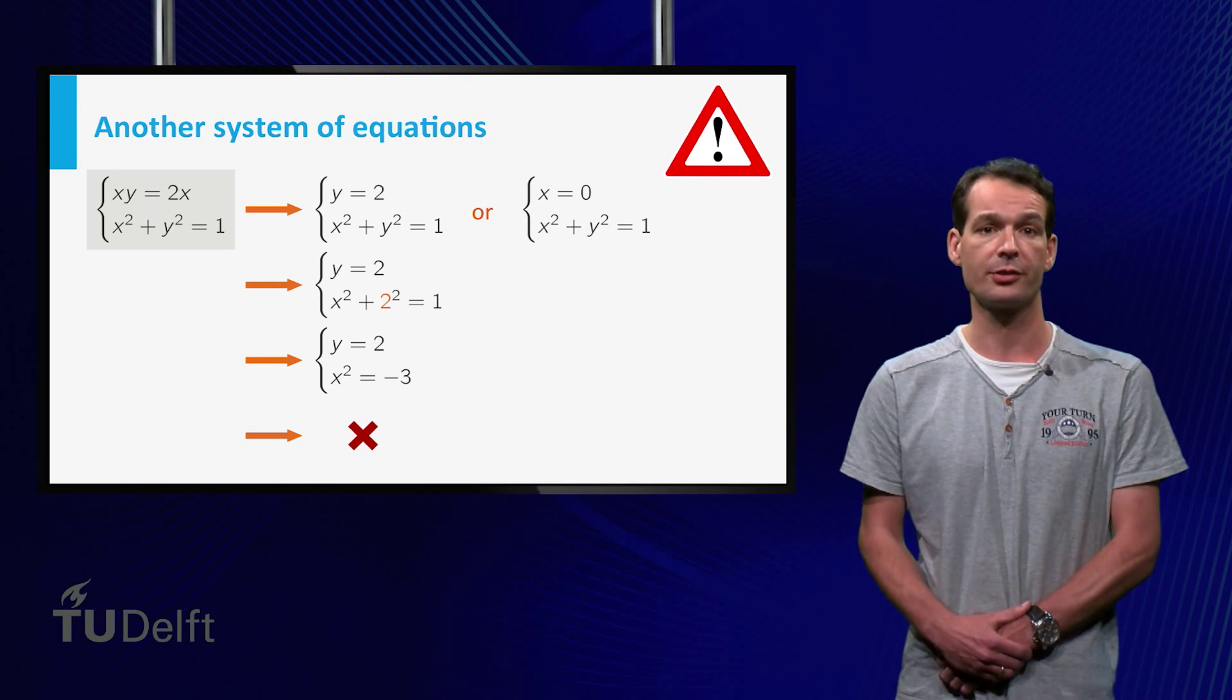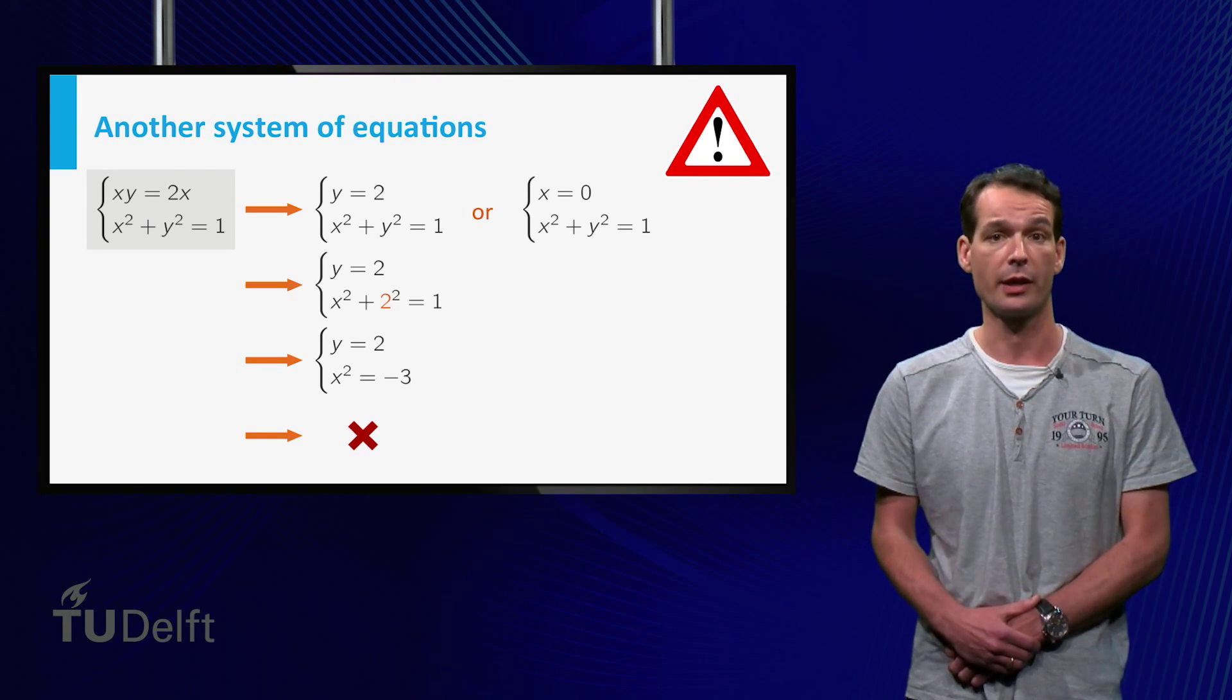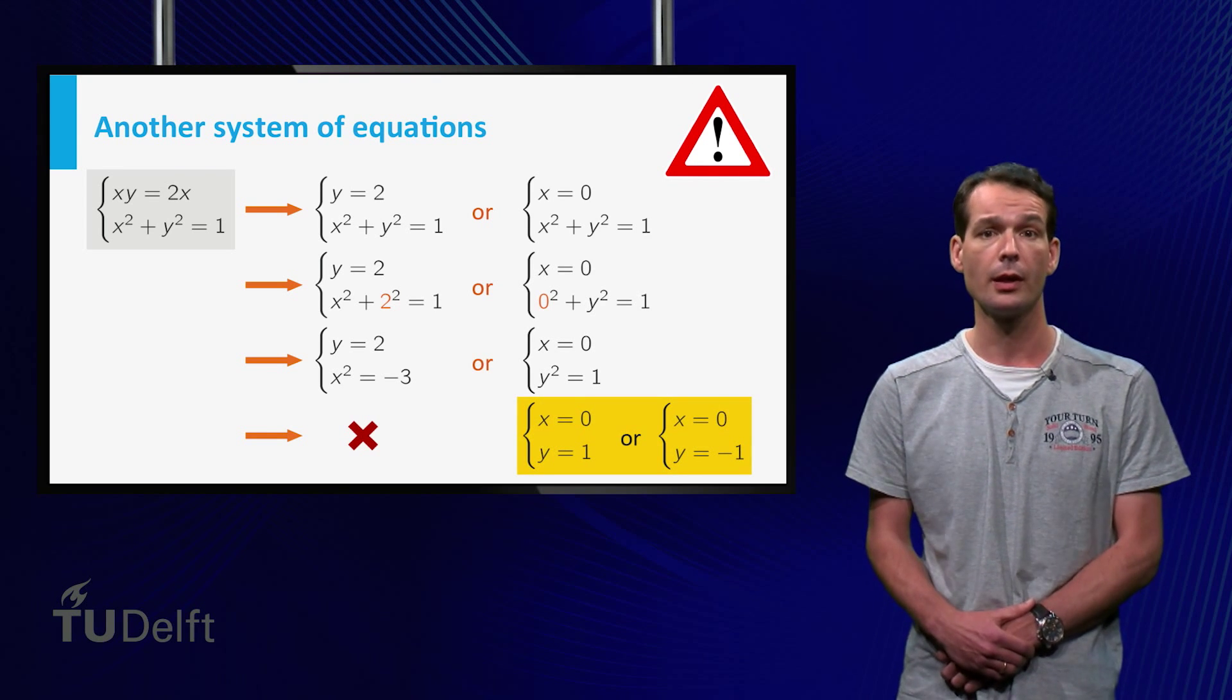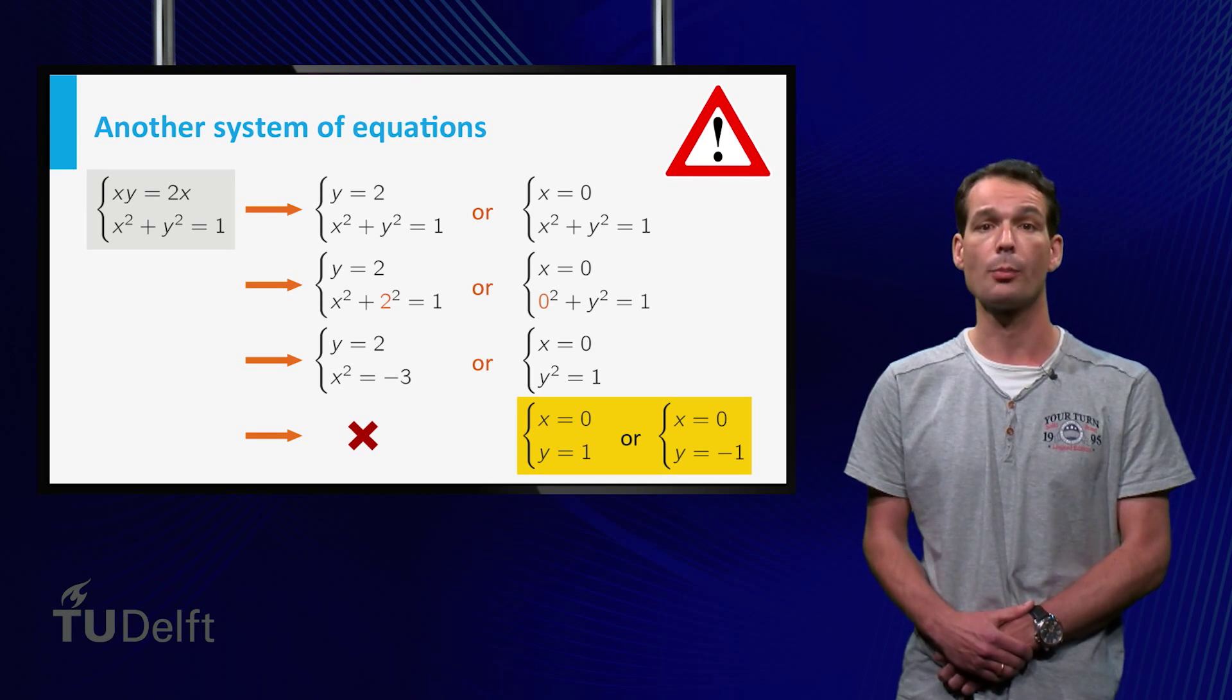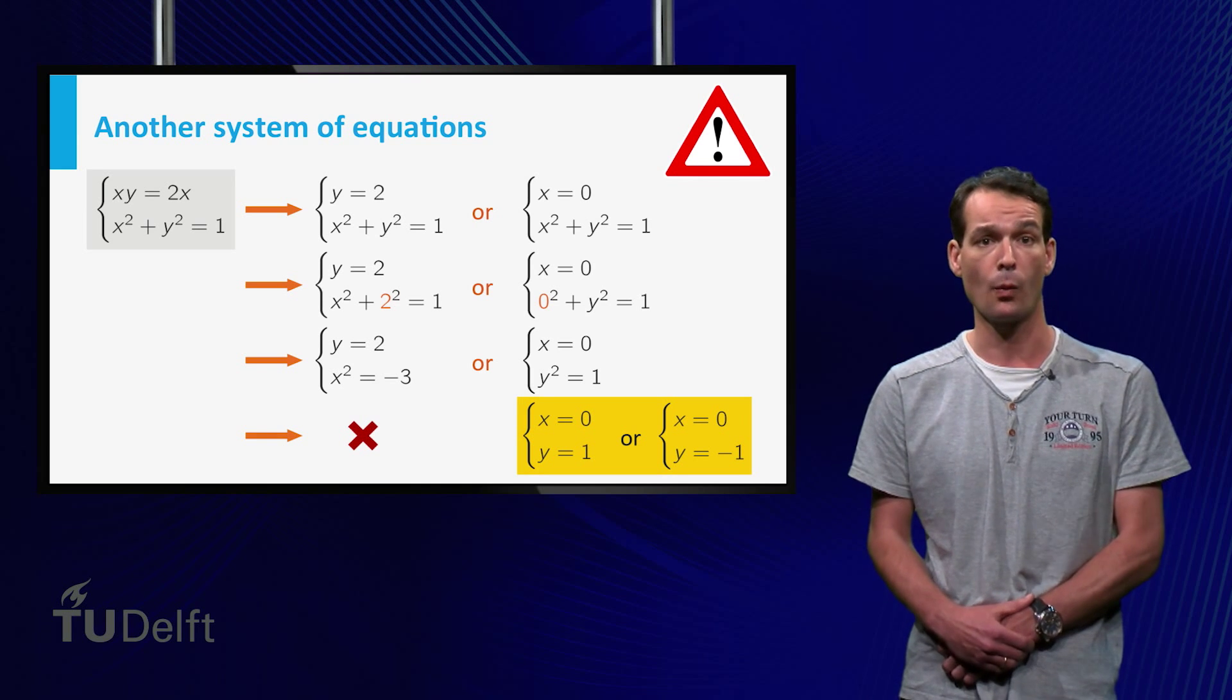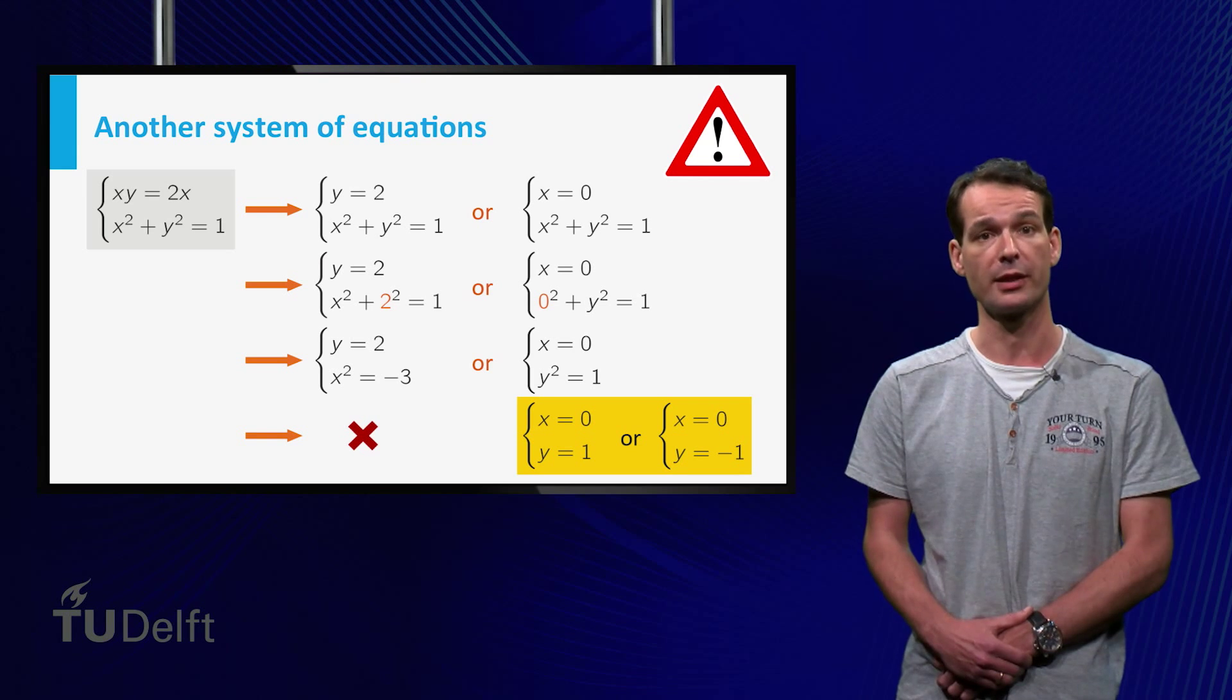This is because the equation x times y equals 2x has solutions y is equal to 2 and x is equal to 0. Plugging x equals 0 into the other equation gives y squared equals 1, so that y equals plus 1 or minus 1. So our system of equations has two solutions, x equals 0 and y equals 1, and x equals 0 and y equals minus 1.